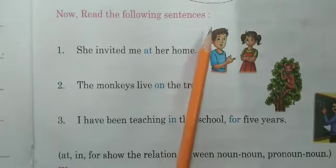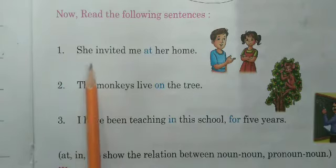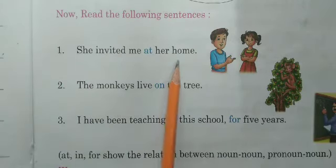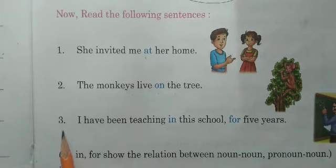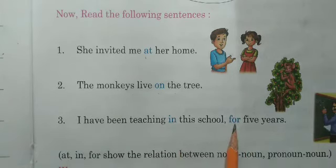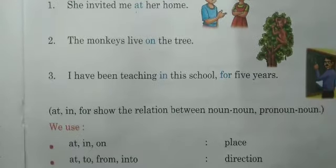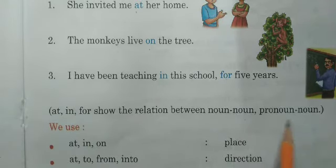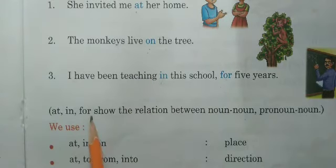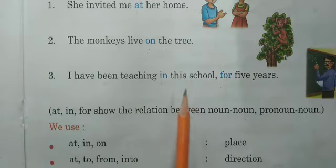Now read the following sentences. Yahan par jo sentences hain unhe hum read karenge. First: she invited me at her home — yahan par 'at' preposition hai. Second: the monkeys live on the tree — yahan par 'on' preposition hai. Third: I have been teaching in this school for five years — yahan par 'in' and 'for' preposition words hain. At, on, in, for show the relation between noun and noun or noun and pronoun.